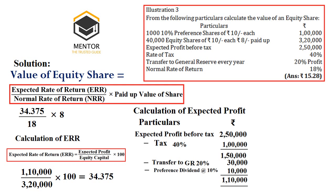In the main formula, we apply expected rate of return 34.375 as the numerator. We then get the ultimate answer: the value of share is Rs. 15.28. This is the way we need to calculate. I hope I made you understand this question. We will take up one more question.